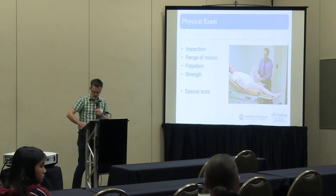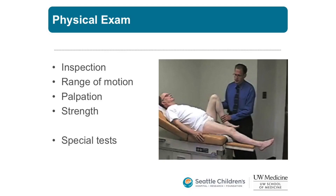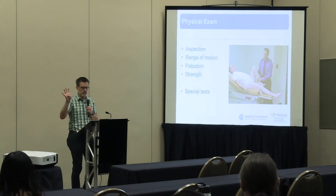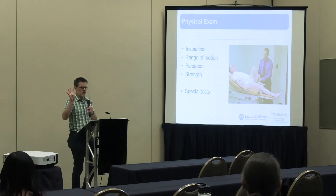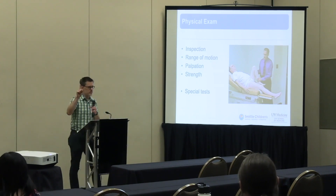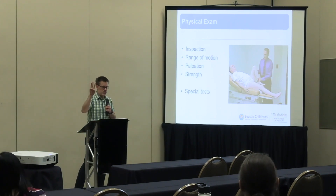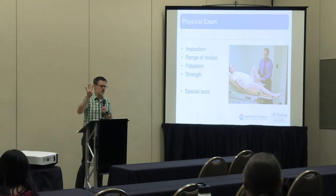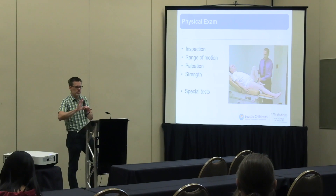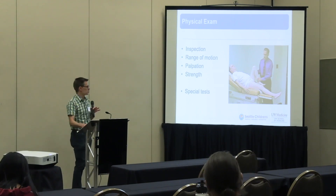The physical exam has five components. I teach fellows and residents at Seattle Children's that if you remember the first four, that's 80% — that's passing. Those four are inspection, range of motion, palpation, and strength. Any special tests you do on top of that — that's frosting. If you remember those four things, you get a pretty good sense of what's going on.